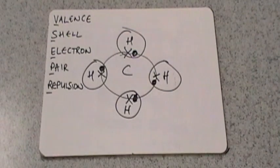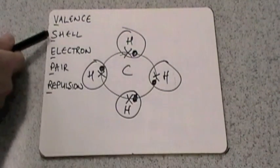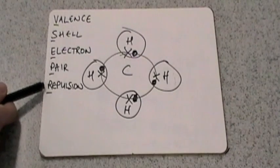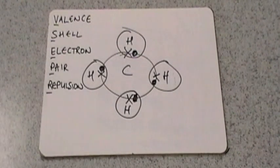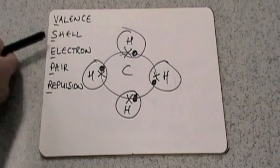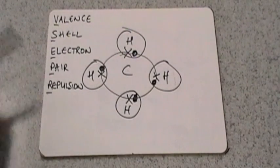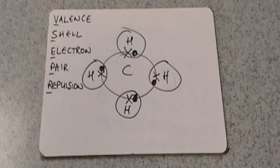We're going to use a theory known as VSEPR, and that stands for valence shell electron pair repulsion. So a few things to point out first before we get started.